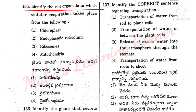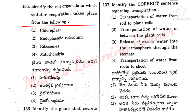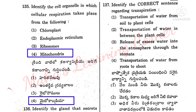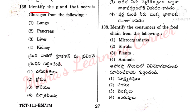Identify the cell organelle in which cellular respiration takes place from the following. Krindi vatil lho kanasvasa kriya jarighe kananga ni guttin chandhi. Option 4: Mitochondria is the correct answer.